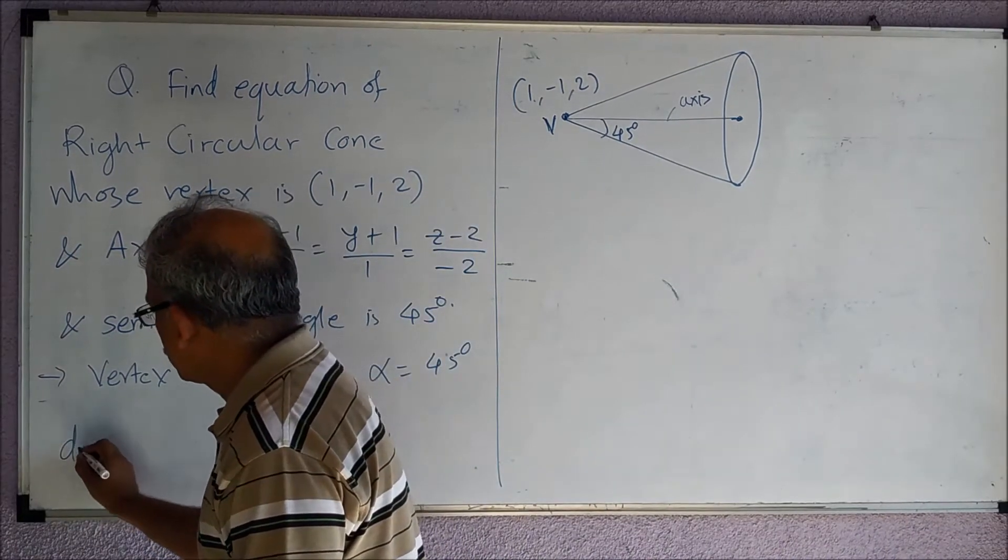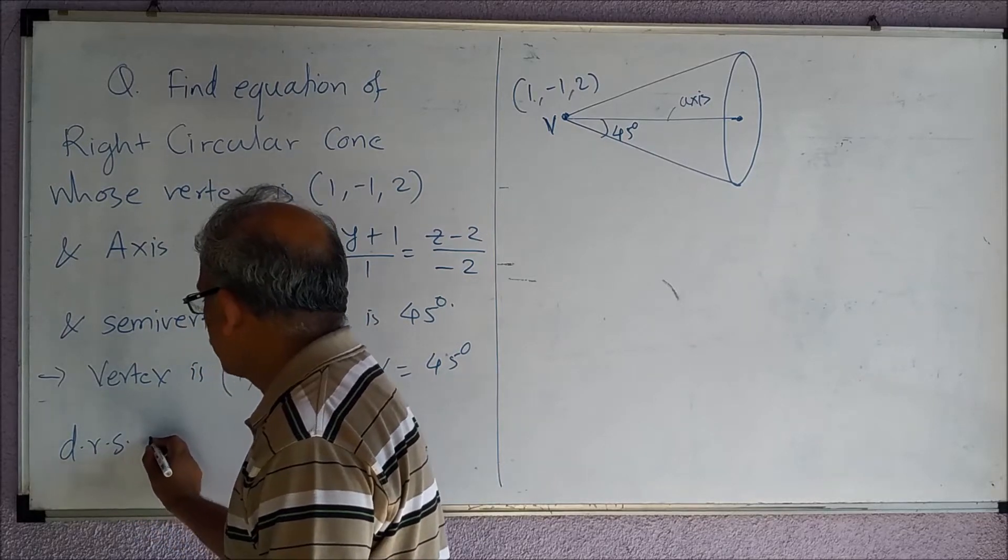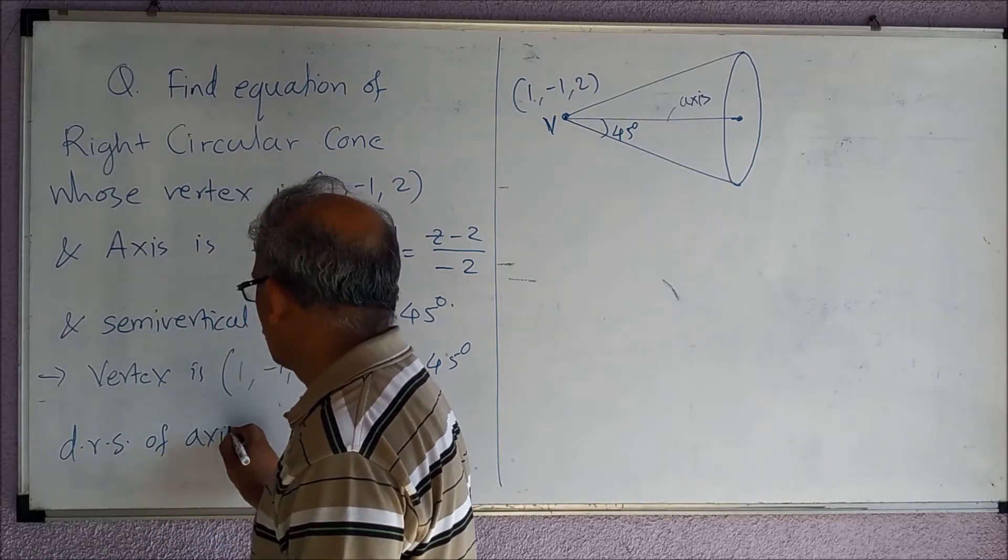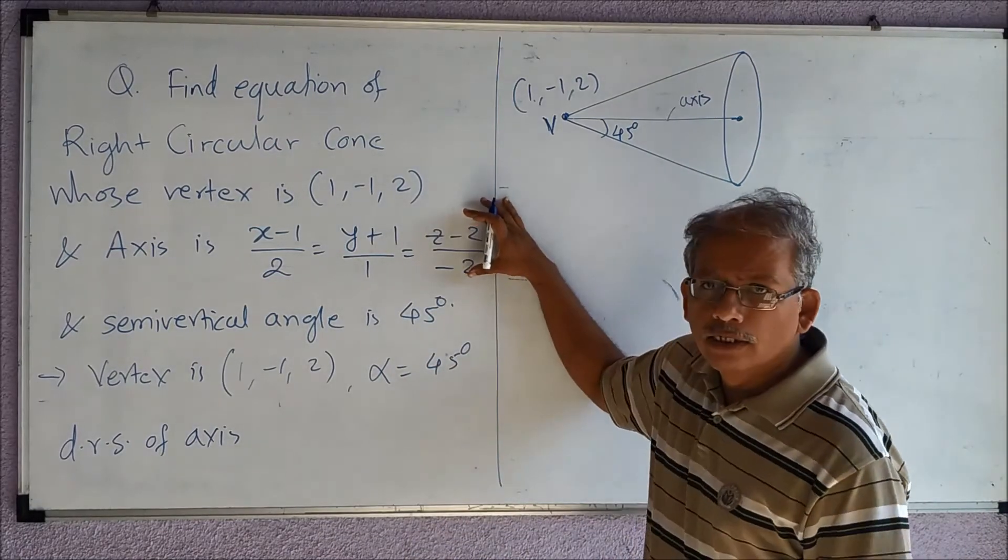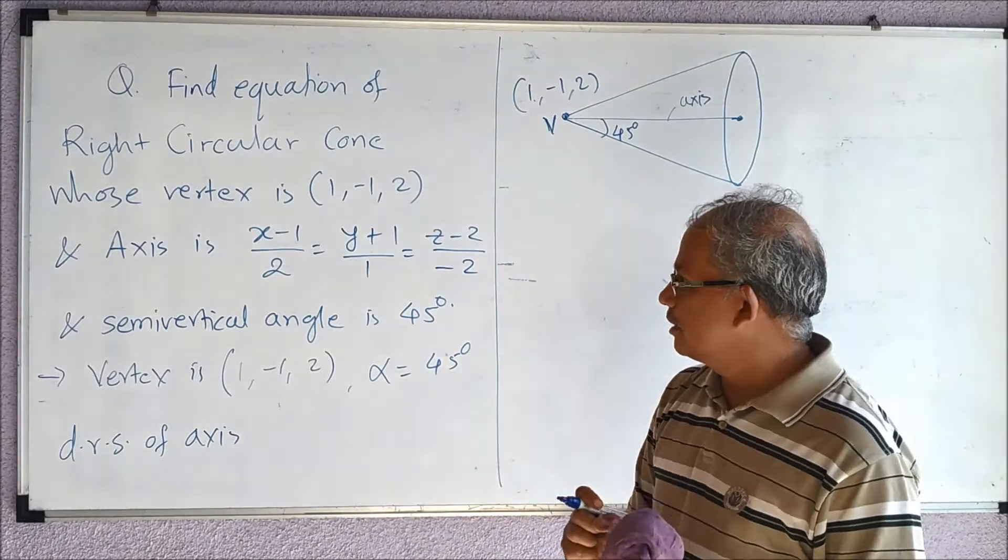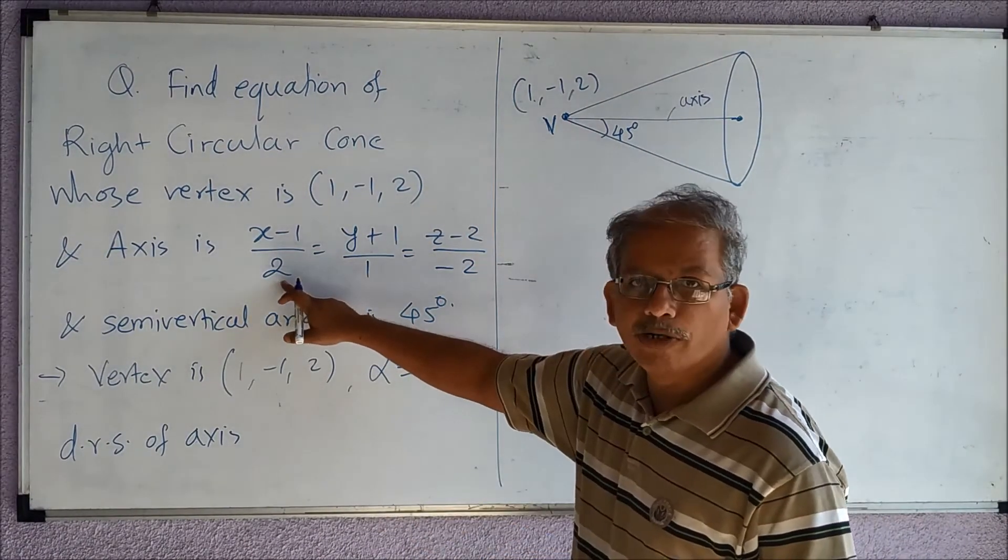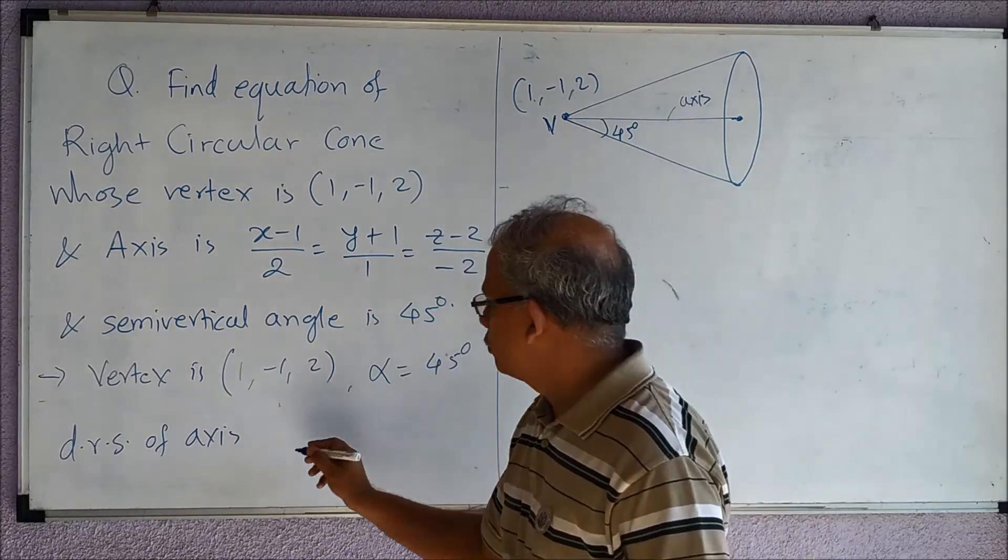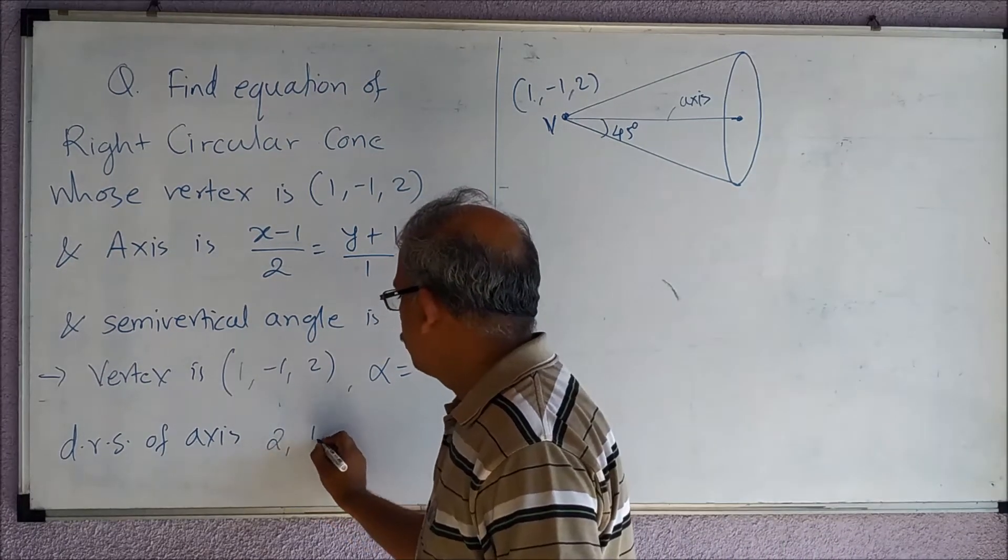And I know the direction ratios of the axis. These are important for me. From this equation of axis we will take only the direction ratios, and what are the direction ratios? They are the denominators: 2, 1, and -2.